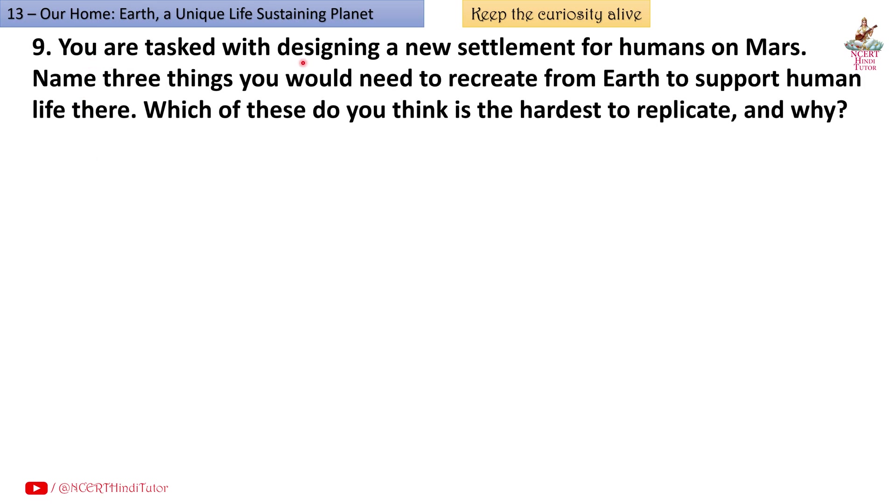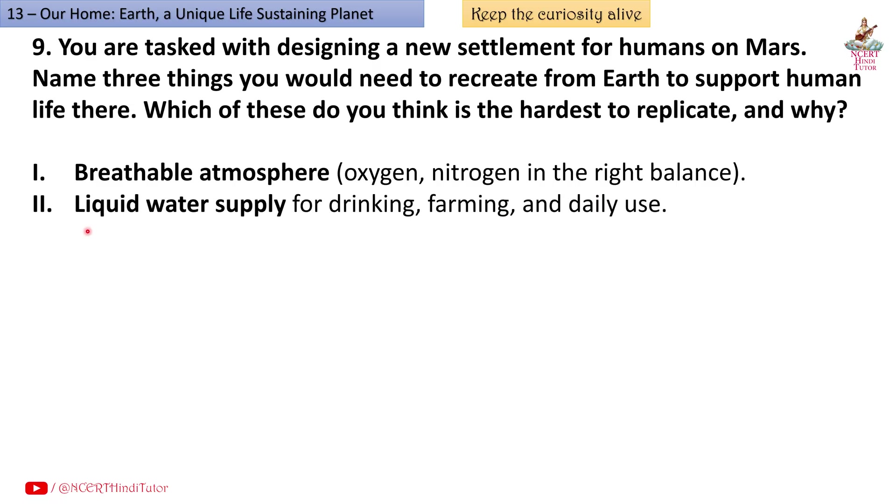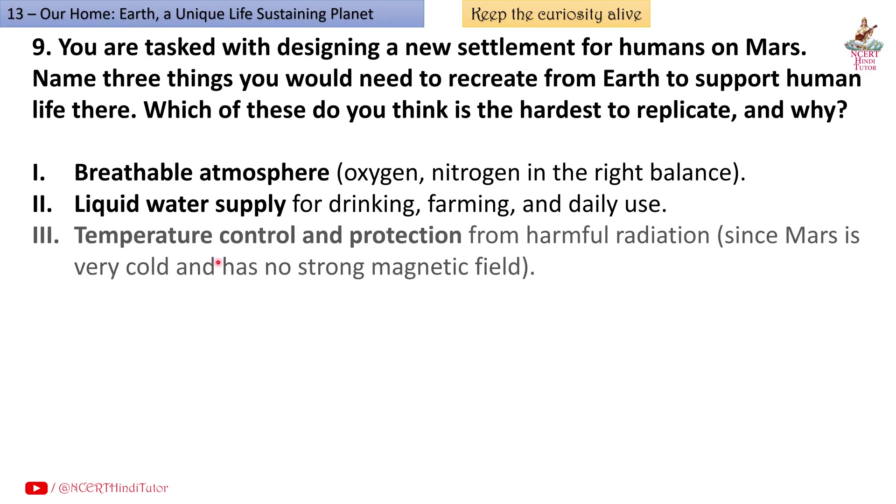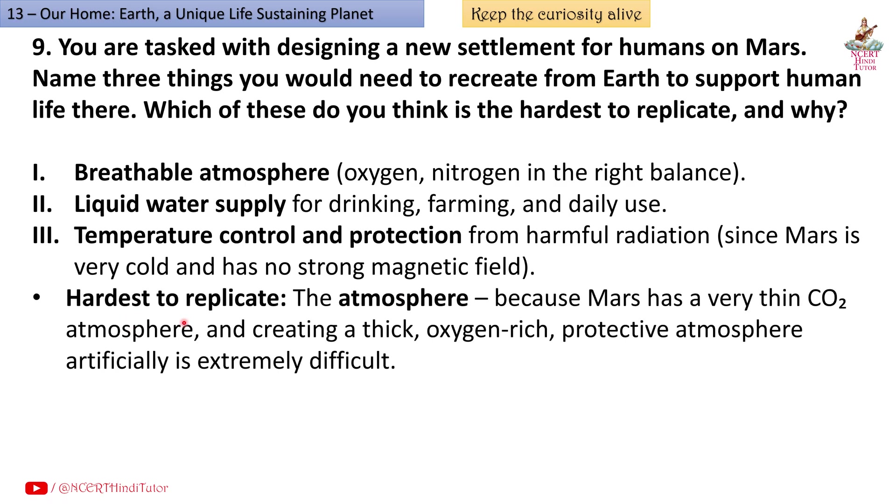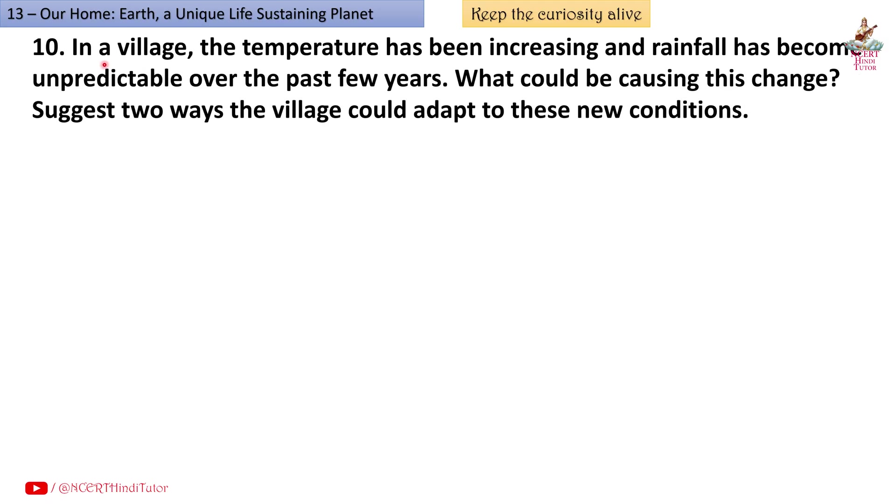Question 9: You are tasked with designing a new settlement for humans on Mars. Name 3 things you would need to recreate from earth to support human life there. Which of these do you think is the hardest to replicate and why? Answer: First, breathable atmosphere - oxygen, nitrogen in the right balance. Second, liquid water supply for drinking, farming and daily use. Third, temperature control and protection from harmful radiation, since Mars is very cold and has no strong magnetic field. Hardest to replicate: the atmosphere, because Mars has a very thin CO2 atmosphere and creating a thick, oxygen-rich, protective atmosphere artificially is extremely difficult.